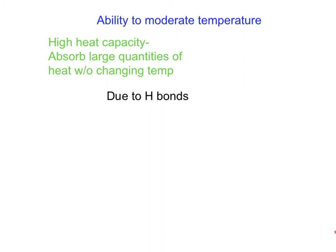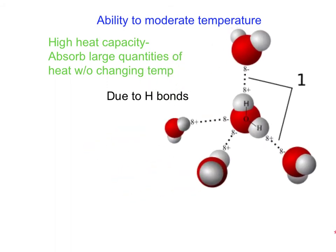Water has such a high heat capacity due to its hydrogen bonds. Water forms two hydrogen bonds with other water molecules, so these molecules are really attracted to one another. It takes a lot of energy to break them apart, to turn them from liquid into steam. That's part of having a high heat capacity — all those hydrogen bonds help regulate temperature very well.